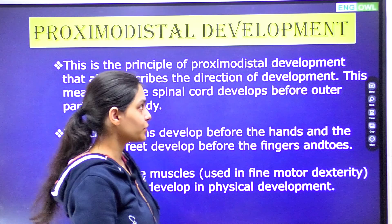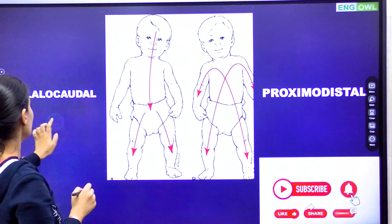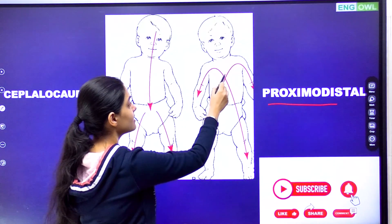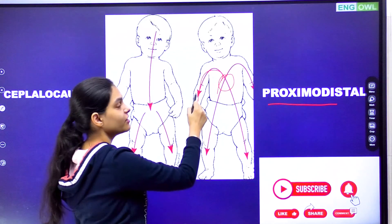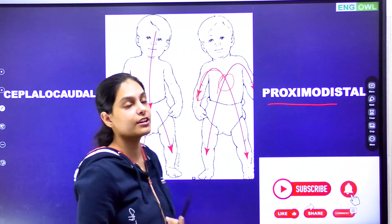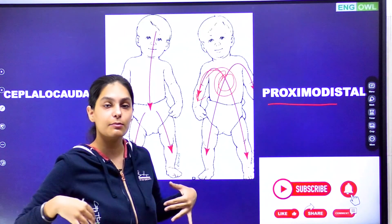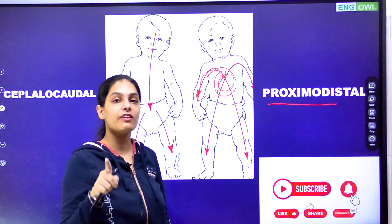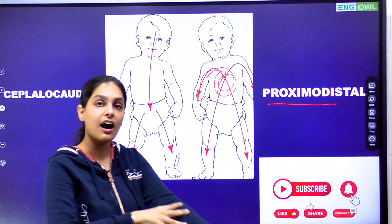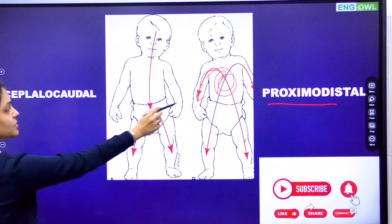The fourth principle is proximodistal development. The word 'proximal' means moving from the center to the periphery. We first develop in the center area and later in the periphery. This is why gross motor development comes before fine motor development. Our pattern of development is proximodistal — first you develop from inside, from the center, and then the periphery. First you develop the rib cage and then the hands. First you develop the spinal cord and then the fingers. This is why it is called proximodistal development.